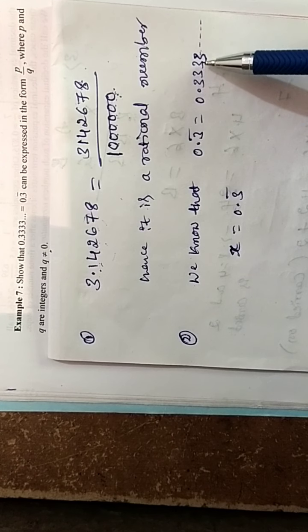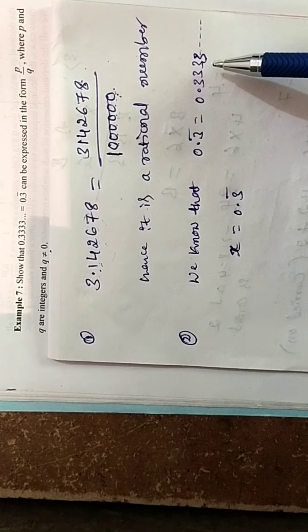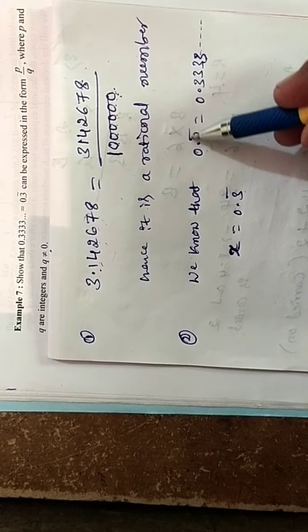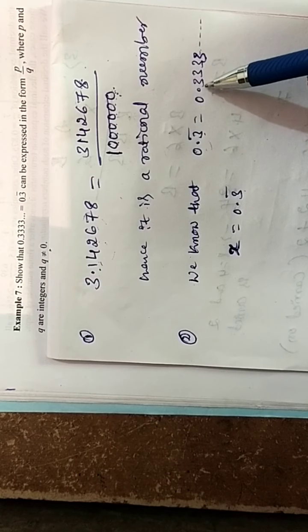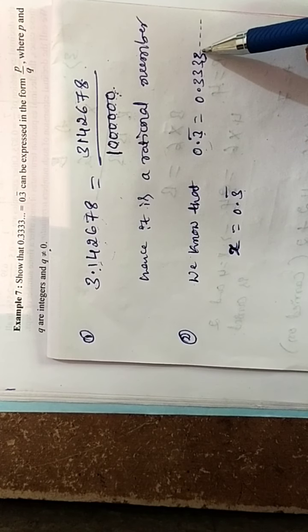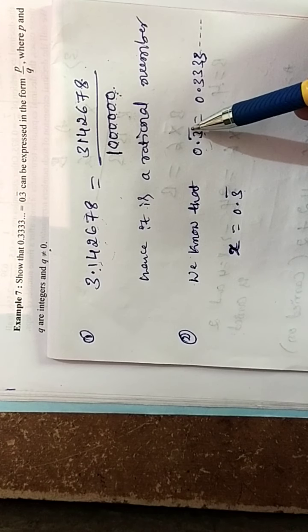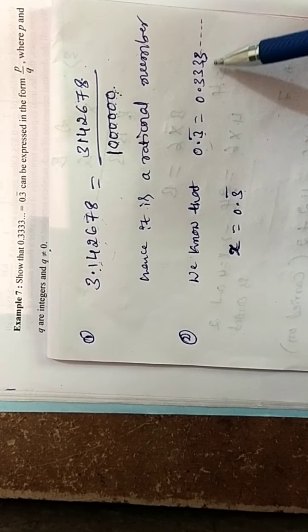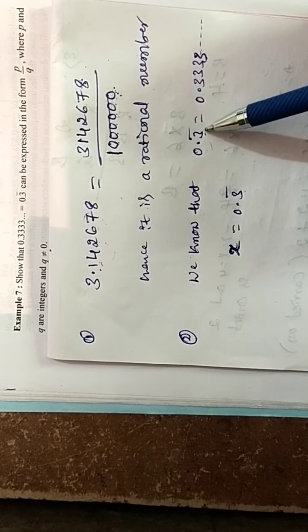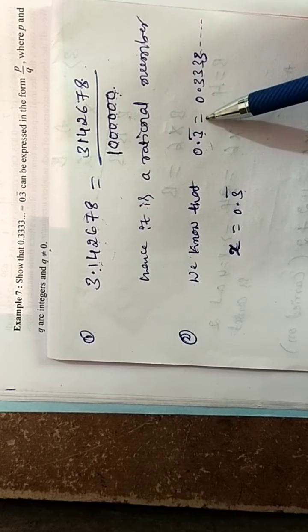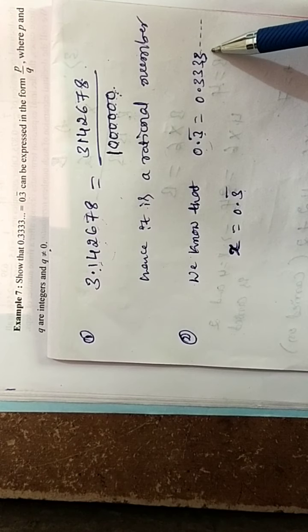Here only one number is repeating. This is very important: when one number is repeating, we multiply by 10. If two digits repeat, we multiply by 100. If three digits repeat, we multiply by 1000.